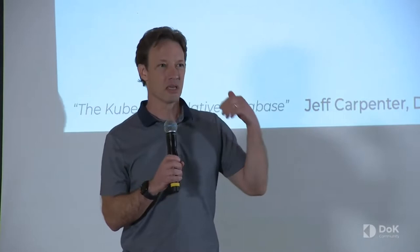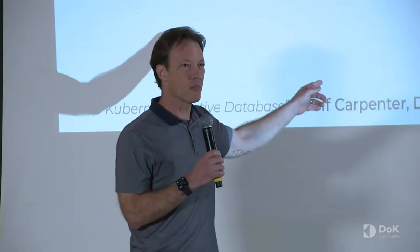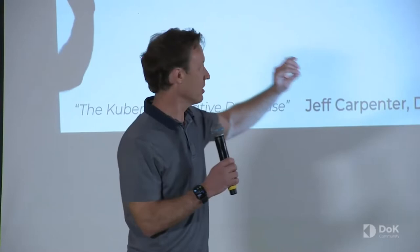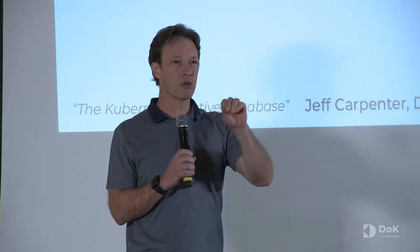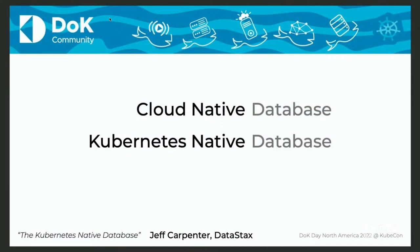We're here because we're into cloud native. This is the world that we're living in. When we think cloud native, we think about containers, microservices, automation, good observability and monitoring — all of these things. So what would it mean for a database to be cloud native? And then: what would a Kubernetes native database be? Is that the same thing as a cloud native database, or is it cloud native plus some special sauce, or an entirely disjoint set?